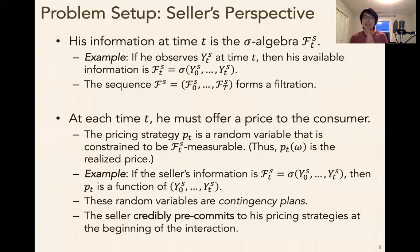And the idea is that the seller credibly pre-commits to his pricing strategies to these contingency plans, to these functions at the beginning of the interaction. So even before the consumer makes her first decision, the seller has already announced P0 through P capital T. All these functions are known, so the consumer really knows the arc of where prices will go in a distributional sense. And that is one of the strongest assumptions that we make throughout this work. And I'll talk a little bit more about relaxing this at the end.